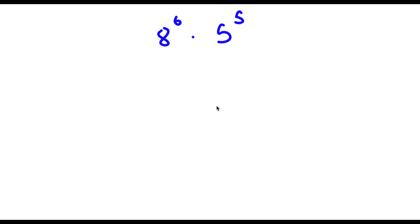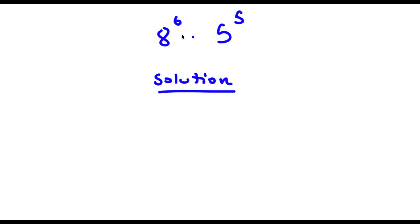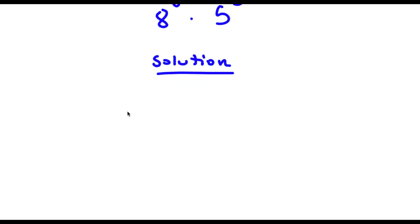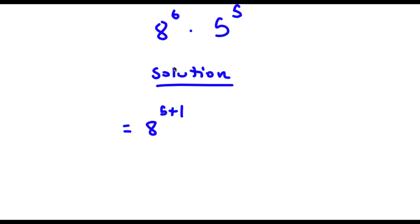Alright, so I have 8 to the power of 6 times 5 to the power of 5. For my solution, 8 to the power of 6 we can rewrite as 8 to the power of 5 plus 1, because 6 is the same thing as 5 plus 1.